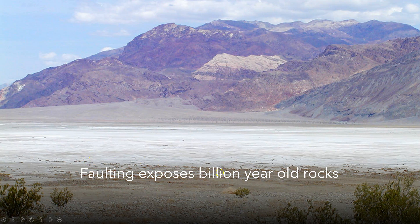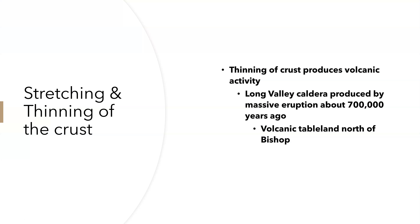Faulting exposes billion-year-old rocks as basins drop down and more rocks are exposed at the surface. Stretching and thinning of the crust can create volcanic activity because the thinner the crust, the easier it is for mantle material to find cracks and erupt at the surface. Long Valley, in Owens Valley where the first extension occurs after the Sierra Nevada, produced massive eruptions about 700,000 years ago, and we see a lot of volcanic activity throughout Owens Valley.